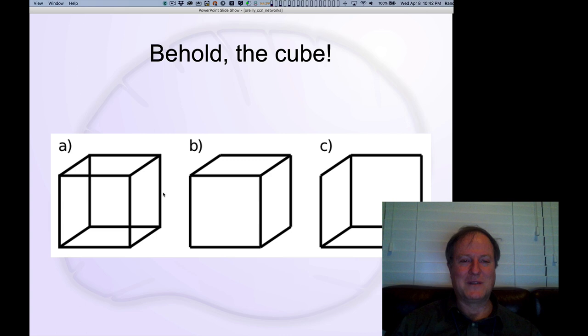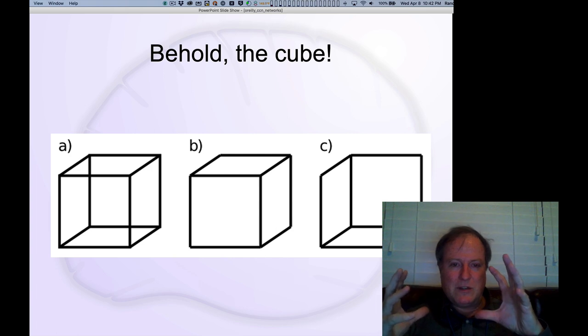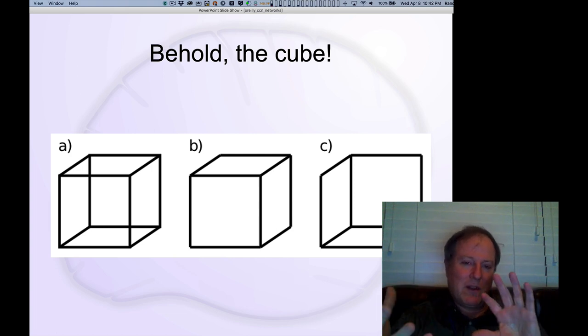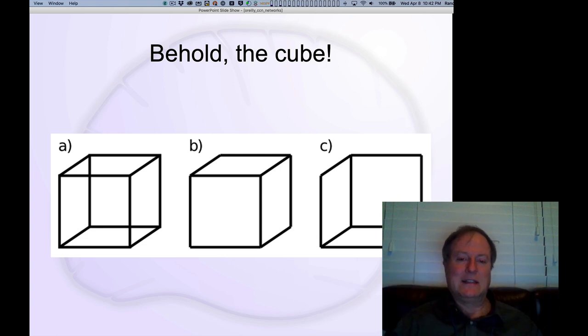You kind of go back and forth between these two interpretations, but what you don't do is go in a halfway state. You always settle into a coherent overall interpretation of the cube where all the different vertices make sense in terms of one of these two different possible interpretations. That is this principle that we have these attractor states, these minimum energy states that our brain settles into. You can flip between one or the other but you don't get into these weird intermediate states that have less consistency.